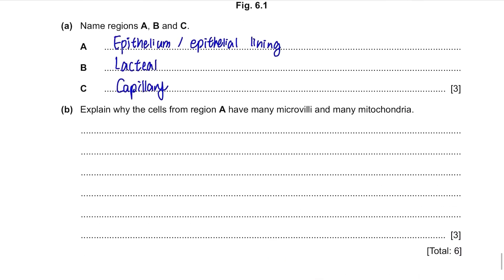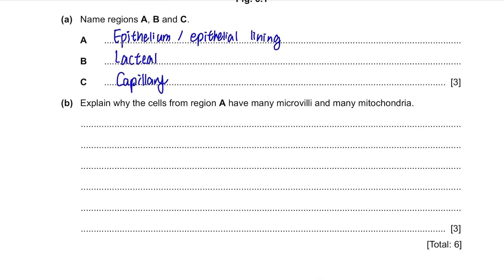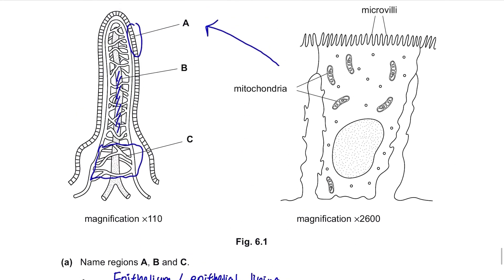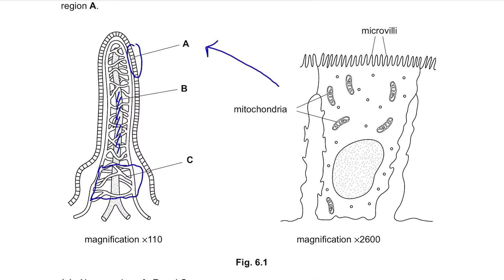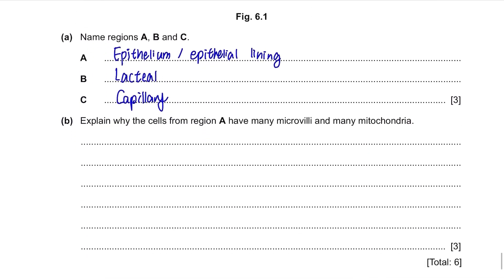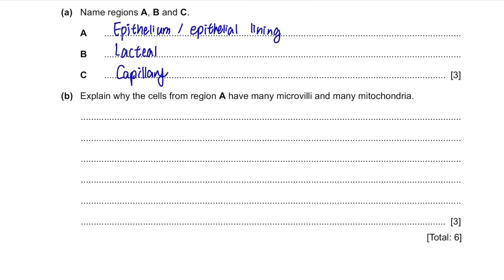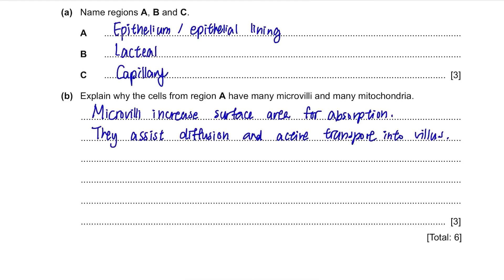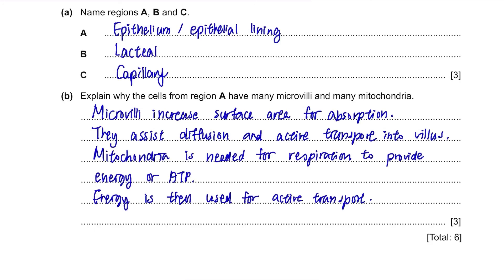Part B. Explain why the cells from region A have many microvilli and many mitochondria. If asked why a certain feature exists, you need to write down its functions. Microvilli increase the surface area of the cells, allowing maximum absorption, and assist diffusion and active transport into the villus. Mitochondria carry out respiration, producing energy or ATP, which can be used for active transport.